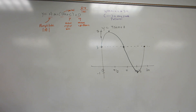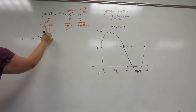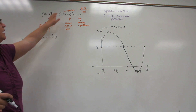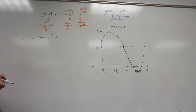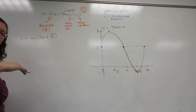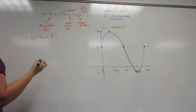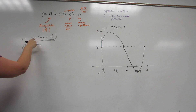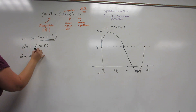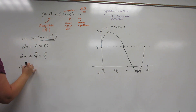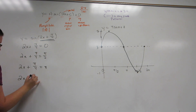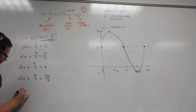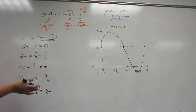Let's do one more example. This one, instead of having A and D, has B and C. So we're going to be affecting the x-coordinates, and this is a little bit harder to do. The y-coordinates are still going to be the same as the original: center at 0, high at 1, low at negative 1. But to find our new x-coordinates, we're going to use this trick — warning number 29. To find our new key points, we take whatever is inside the parentheses and set it equal to our original key points. This gives me five equations, and in each one I solve for x.